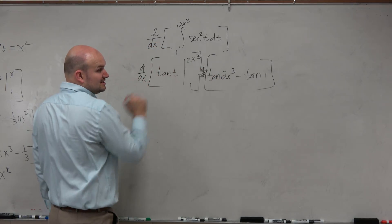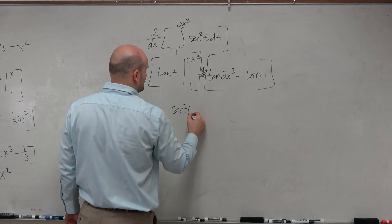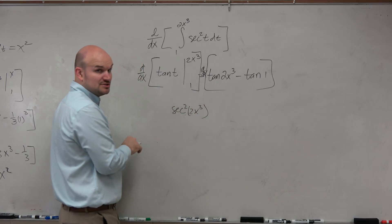Right? And now we just need to take the derivative of this, which the derivative of tangent is going to be secant squared of 2x cubed times the chain rule,